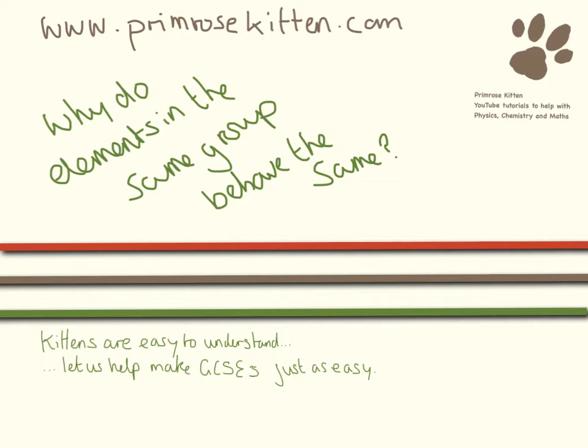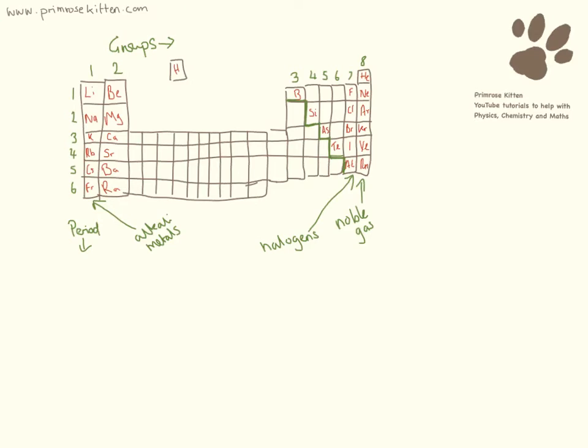Understanding this question is key to chemistry. On our periodic table we have lots of different groups. We have the noble gases over here, we have the halogens, and we have the alkaline metals.